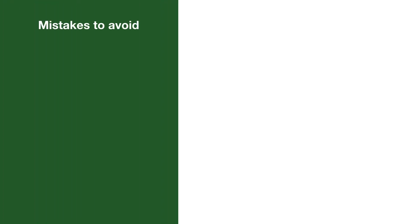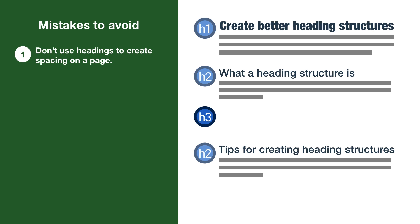Let's end with mistakes to avoid. These mistakes can make your heading structure inaccessible to screen reader users. First, don't use headings to create spacing on a page — this makes an empty heading. Empty headings don't have any content in them. For visual users, it looks like a space. But since it has the heading styling, screen reader users now have an empty heading added to their page structure when they navigate. This can be confusing and frustrating, especially if there are a lot of them.